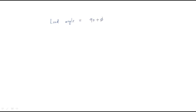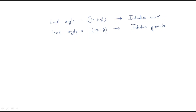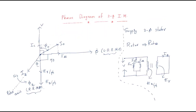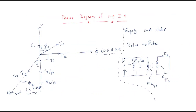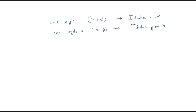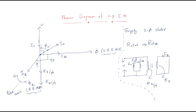This formula — load angle equals 90 plus phi — is for the three-phase induction motor phasor diagram. If the load angle has a minus sign, we get 90 minus phi, which is for the induction generator. This is the phasor diagram of the three-phase induction motor. We will draw another equivalent phasor diagram for the induction motor after covering all the elements of the induction motor.